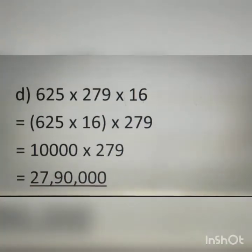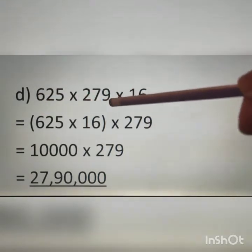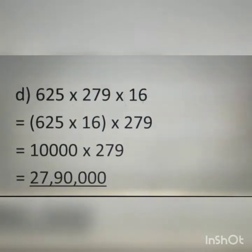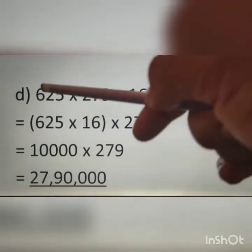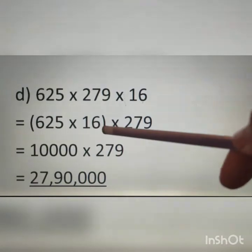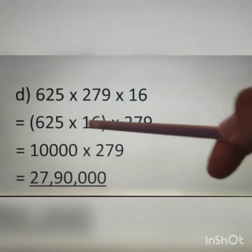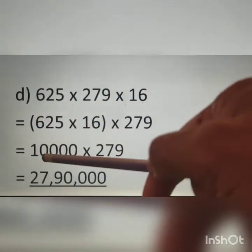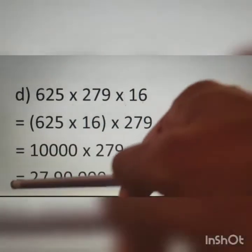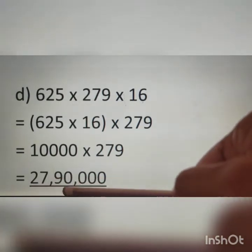Question D: 625 multiplied by 279 multiplied by 16. I rearrange 16 and 625 together to make the calculation easier. 625 multiplied by 16 is 10,000, multiplied by 279. Therefore, the answer is 27,90,000.